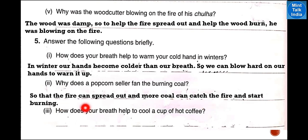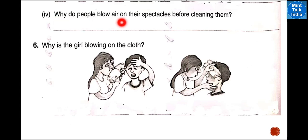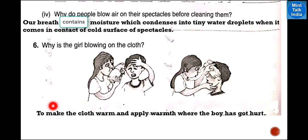Number 3: how does your breath help to cool a cup of hot coffee? Our breath is cooler than a cup of hot coffee, so we can blow air to cool it down. Number 4: why do people blow air on their spectacles before cleaning them? Our breath contains moisture which condenses into tiny water droplets when it comes in contact with a cold surface like spectacles. Number 6: why is the girl blowing on the cloth? The girl is blowing on the cloth to make it warm and apply the warmth where the boy has got hurt.